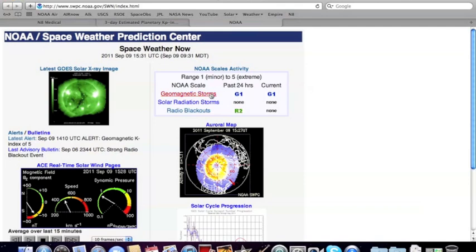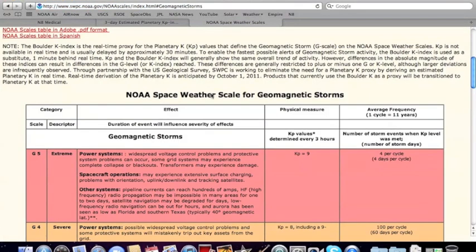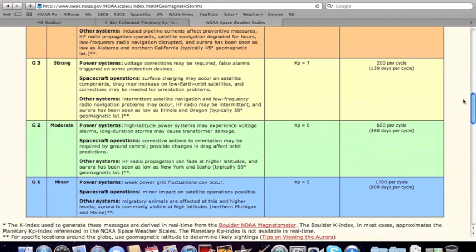As you can see here on NOAA, we'll bring you down to look at what a minor G1 storm does to the Earth. Weak power grid fluctuations can occur, can have an impact on satellites and other animals.